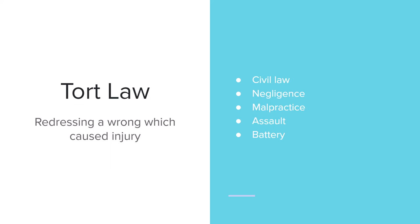Tort law addresses the wrong that caused injury. Negligence is when the nurse neglects to do what the patient requires. Malpractice is when the nurse fails to provide the standard of care, resulting in injury. We also have assault, which is the threat of harm — if a patient believes they will be harmed. So if a patient is not cooperative and you threaten them and they truly believe they can be harmed, that's considered assault.